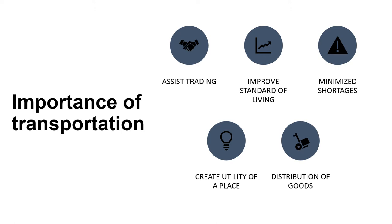Transportation also improves the standard of living. Imagine you can access only a few shops — the amount of products you can buy is also going to be less. But if you can access a large number of products in different areas, you can improve your standard of living. Transportation will also minimize shortages, creates the utility of place, and helps to distribute goods as needed.